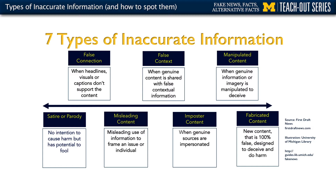Moving from left to right, you can think of these different types of inaccurate information on this typology in terms of their differences in intention to deceive. The types on the left have a lower intention to deceive, whereas the strategies on the right have a greater intention to deceive. Each of these strategies differ in their intentions or goals — some are to parody, some are to put forth propaganda or facilitate partisan goals. The main thing is to distinguish each type so you can recognize them in your newsfeed.